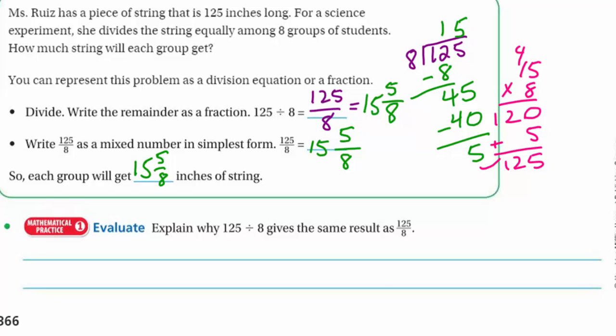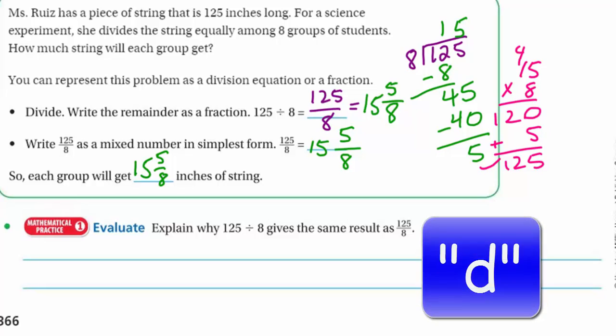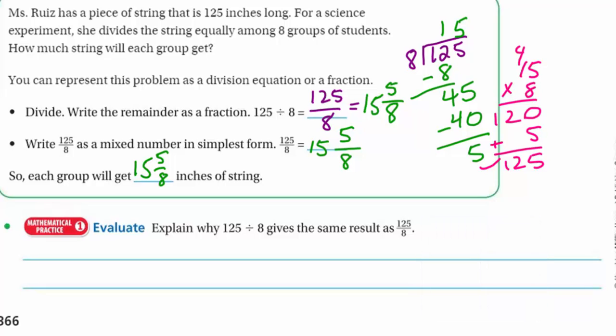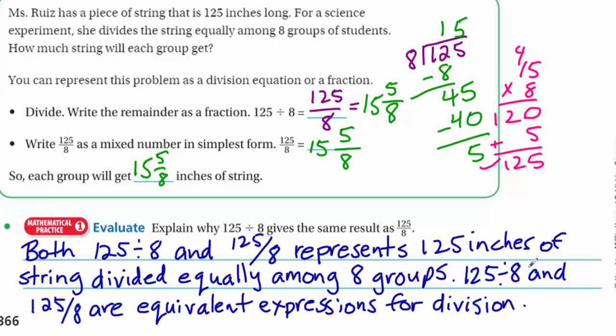Evaluate now. Let's just explain why 125 divided by eight gives the same result as 125 eighths. That is an awesome question. But it's super easy. We covered it right in the beginning of the video. But you see both 125 divided by eight. It showed in this particular problem that it was 125 inches long. So it represents that 125 inches of string. And it's being divided equally among eight groups. When you look at 125 divided by eight, and then you look at the 125 eighths, they're equivalent expressions for division, which is what we already talked about.